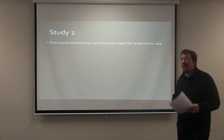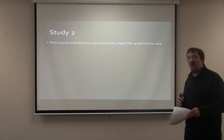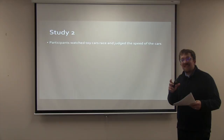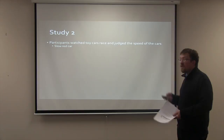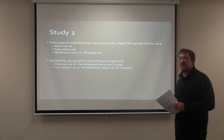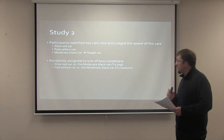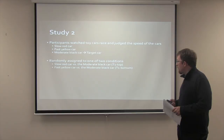In the second study, the researchers had participants watch a toy car race along a track at two different times, and then make evaluations about which car was the fastest. The researchers had participants look at three different cars: a slower red car, a faster yellow car, and a moderate speed black car, which they called the target car. Similar to the first study, participants were randomly assigned to one of two conditions: they either saw the moderate car race the slow car in the T1 top condition, or they saw the moderate car race the fast car in the T1 bottom condition. This was done to make the moderate car look relatively fast when racing the slow car, or relatively slow when racing the fast car.